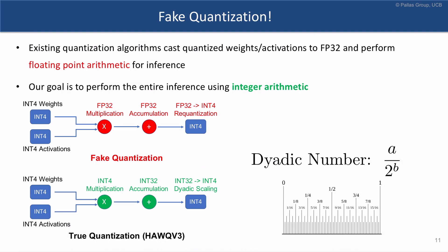Quantization is a very good approach for reducing model size and improving speed. But one of the major problems with existing quantization algorithms is that they cast quantized weights and activations to floating point precision, and as a result, they perform the arithmetic in floating point precision. This approach is sometimes called fake quantization in the literature.